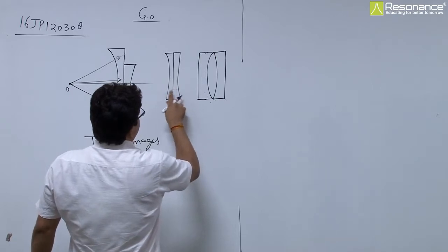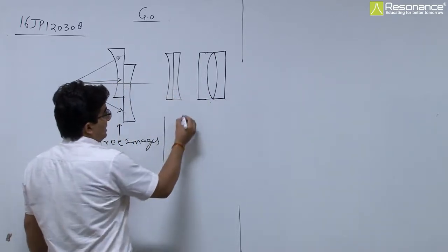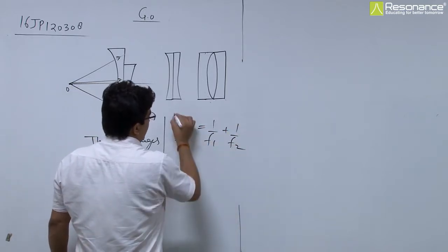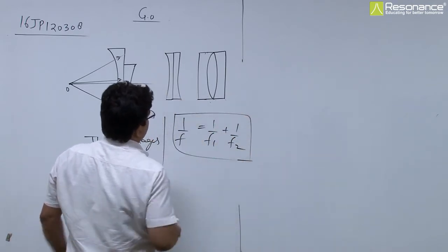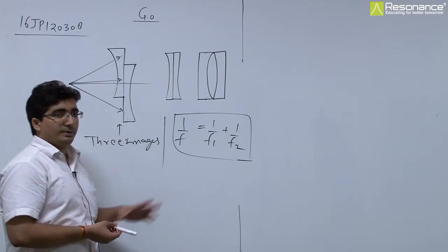These are two lenses placed in contact. So the combination of lenses: 1/f = 1/f1 + 1/f2. Because these are two identical lenses, identical halves, their focal length will be the same. So focal length ratio is 1:1.